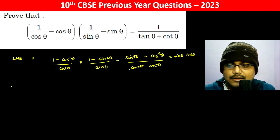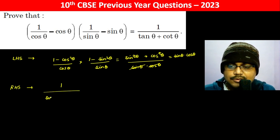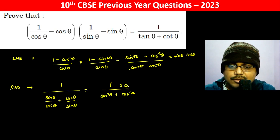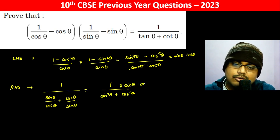Okay, RHS: 1 divided by sin theta by cos theta plus cos theta by sin theta, which is equal to 1 divided by sin square theta plus cos square theta over sin theta into cos theta, which equals sin theta into cos theta. Hence proved.